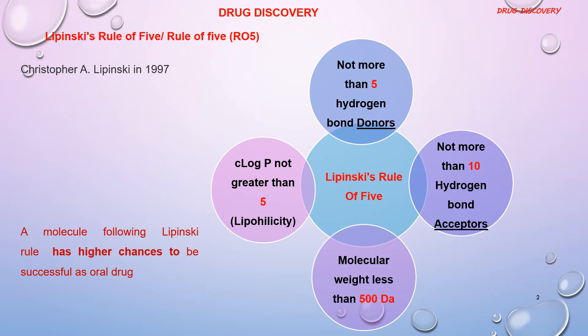There are four sets of rules. First, the molecule should have not more than five hydrogen bond donors — that is, nitrogen or oxygen atoms with one or more hydrogen atoms. This is expressed as the sum of OH and NH groups in the molecule. Second, not more than ten hydrogen bond acceptors — that is, nitrogen or oxygen atoms in the molecule.